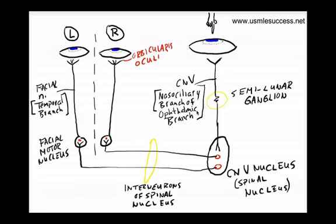Now in making this move from the eye to the spinal nucleus, we're going to pass through the semilunar ganglion. Once we get to the spinal nucleus...